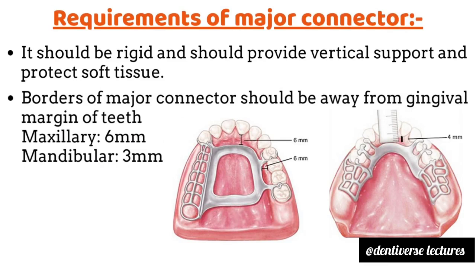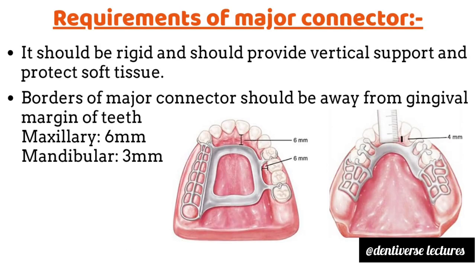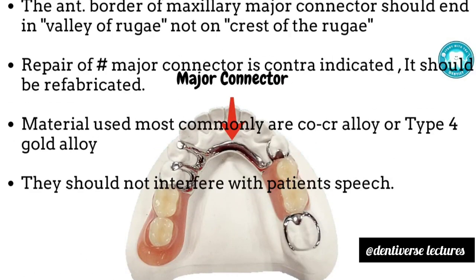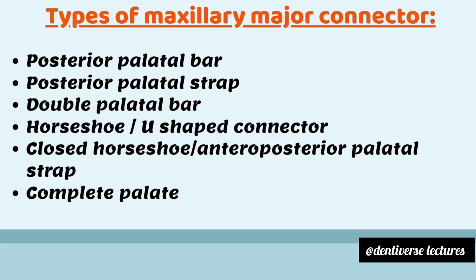Requirements of major connectors are as follows: it should be rigid and should provide vertical support, and protect the soft tissue. Borders of the major connector must be away from the gingival margin — maxillary should be at least 6 millimeters and mandibular should be at least 3 to 4 millimeters. The borders should be round and parallel to the gingival margin. The metal framework should cross the gingival margin at a right angle. The anterior border of the maxillary major connector should end in the valley of the rugae, not on the crest of the rugae. Repair of a fractured major connector is contraindicated — it should always be refabricated. Materials used most commonly are cobalt-chromium alloy or type 4 gold alloy. They should not interfere with patient speech.